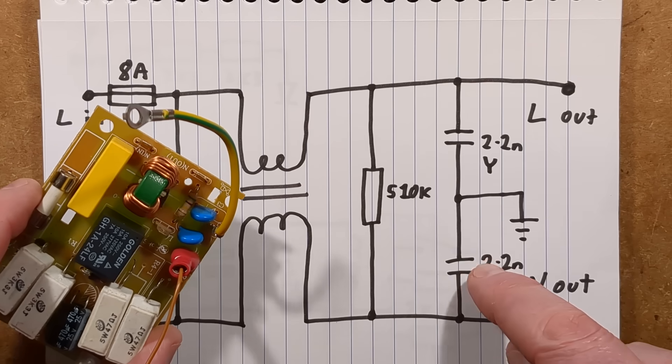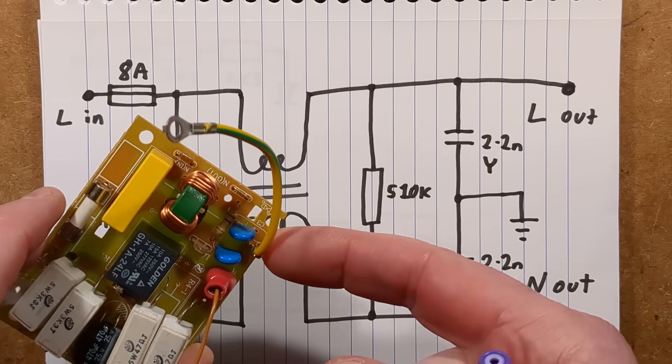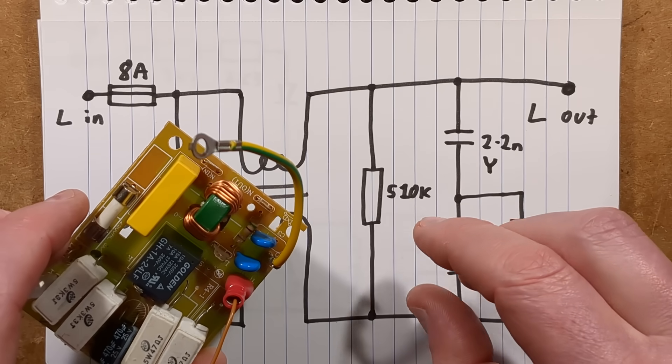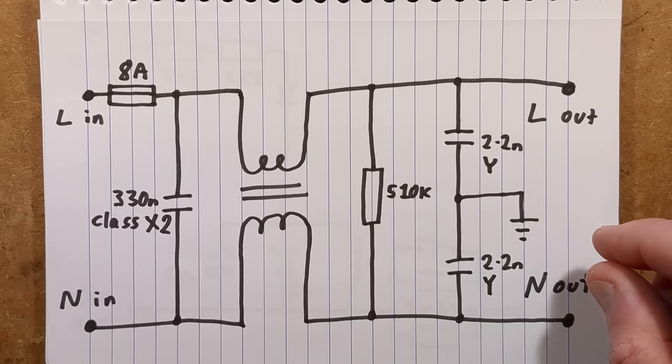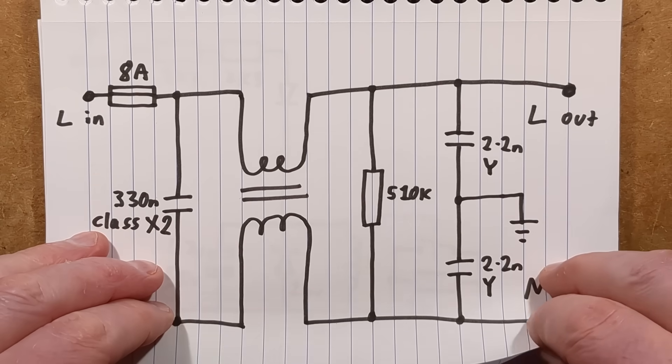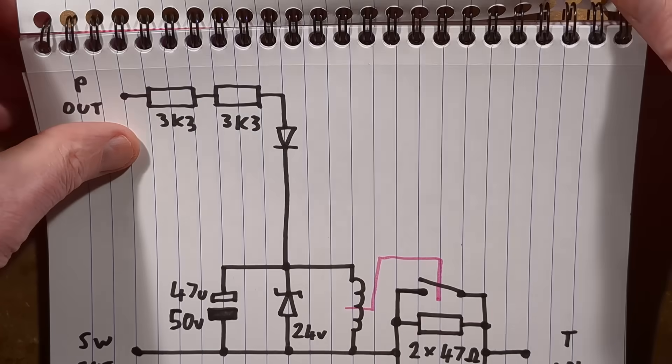And equally good quality, you've got your 2.2 nanofarad class Y capacitors. These are the ones that are designed to fail in a safe manner and these are proper sized ones, not like the tiny ones you get in USB power supplies that are not class Y. They're just basically blue ordinary capacitors and can fail in a dangerous manner.